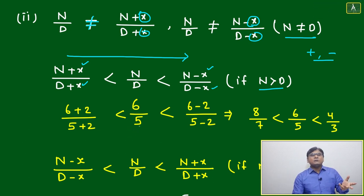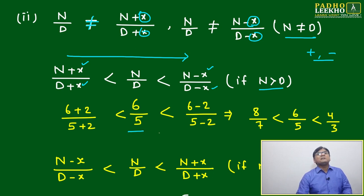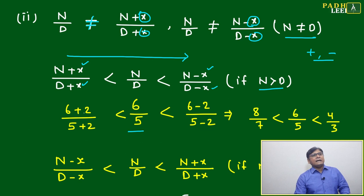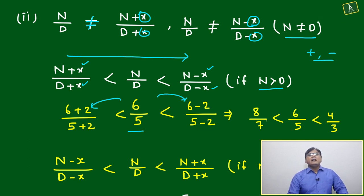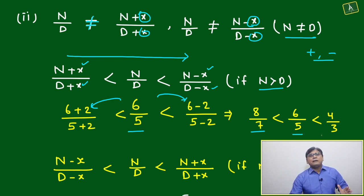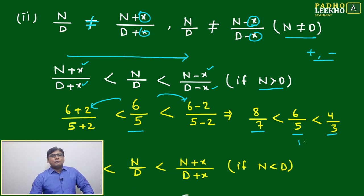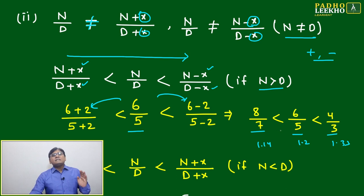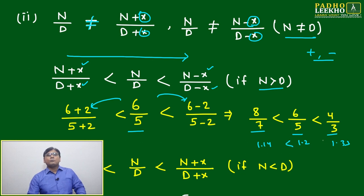To remember this, let's check with an example: take the ratio 6 by 5 — say Ramesh to Soham's salary. If we subtract 2 from numerator and denominator we get 4 by 3, and if we add 2 we get 8 by 7. So the order is: 8/7 less than 6/5 less than 4/3. In decimal: 8/7 is 1 plus 1/7, which is about 14%, so 1.14. Then 6/5 is 1.2, and 4/3 is approximately 1.33. So 1.14 < 1.20 < 1.33 — confirmed.